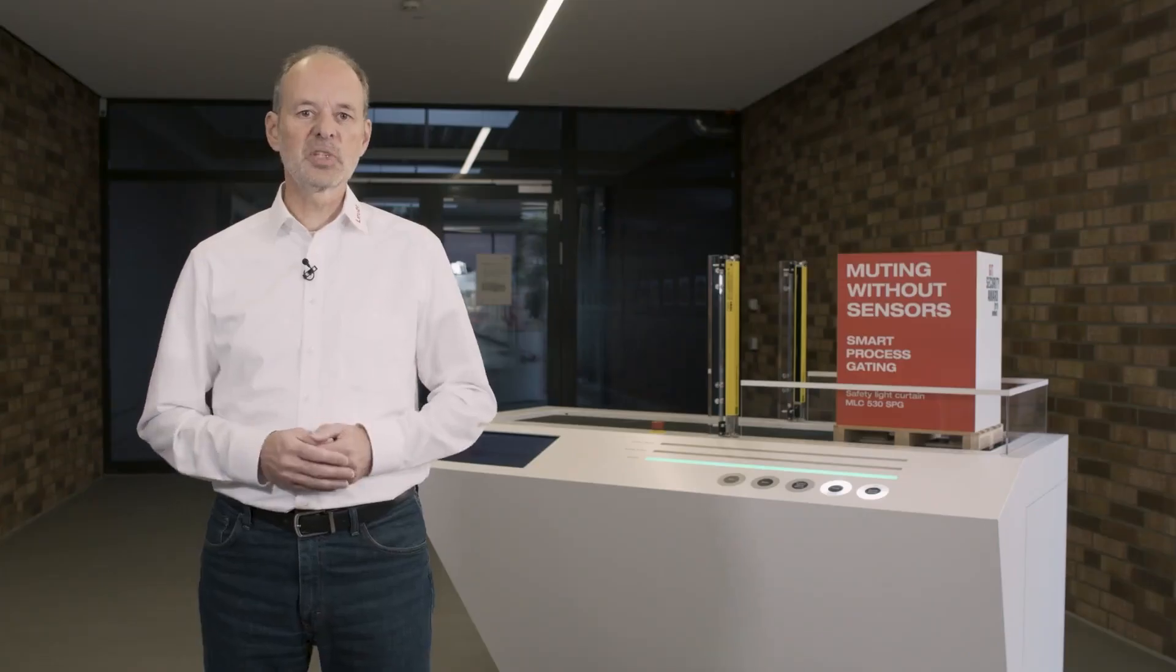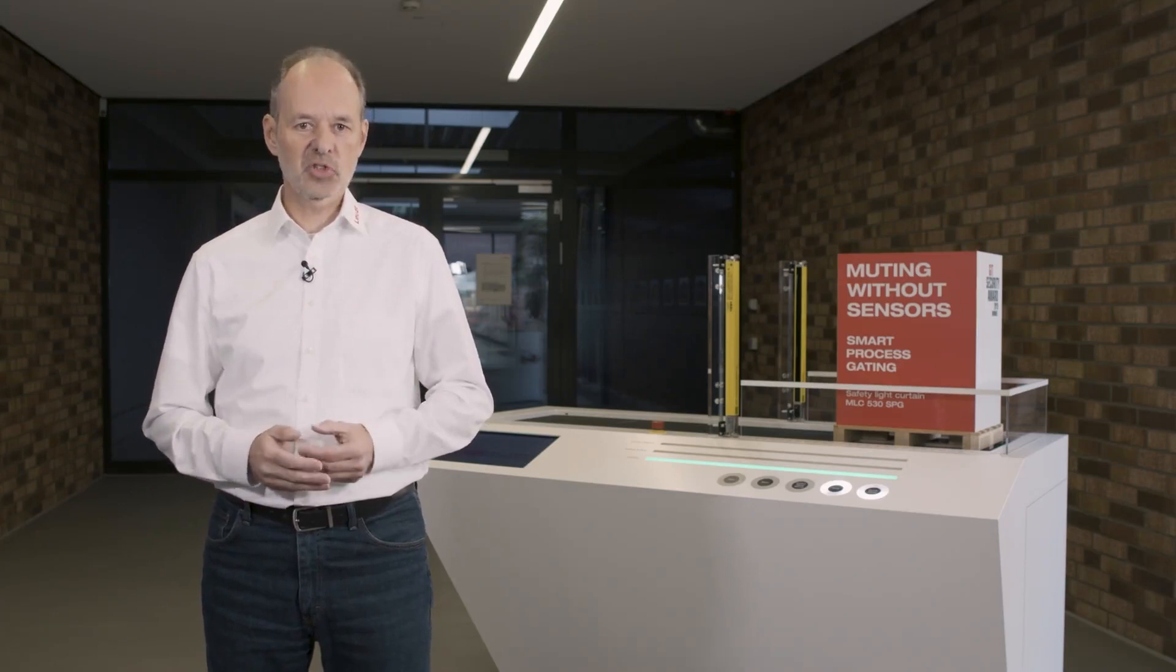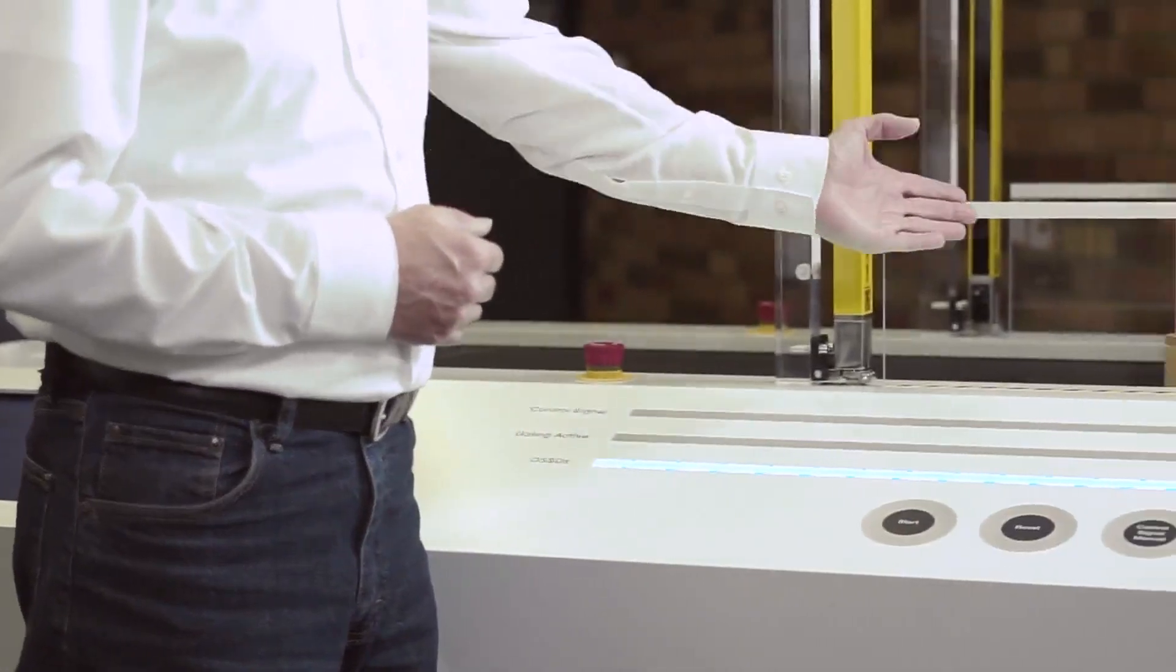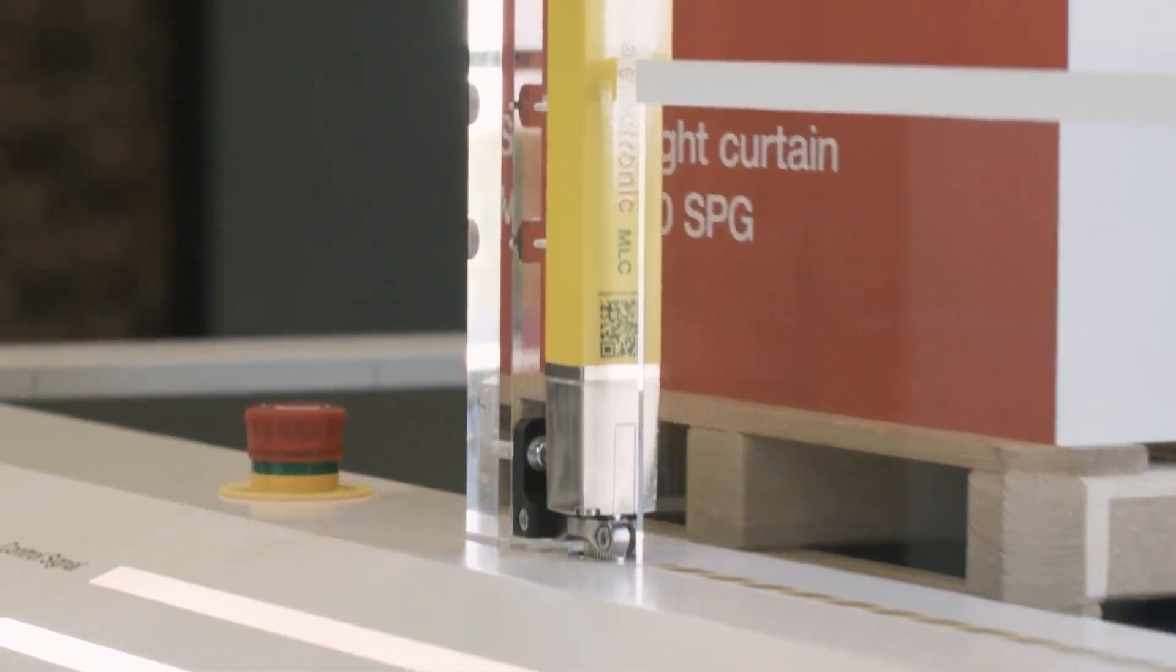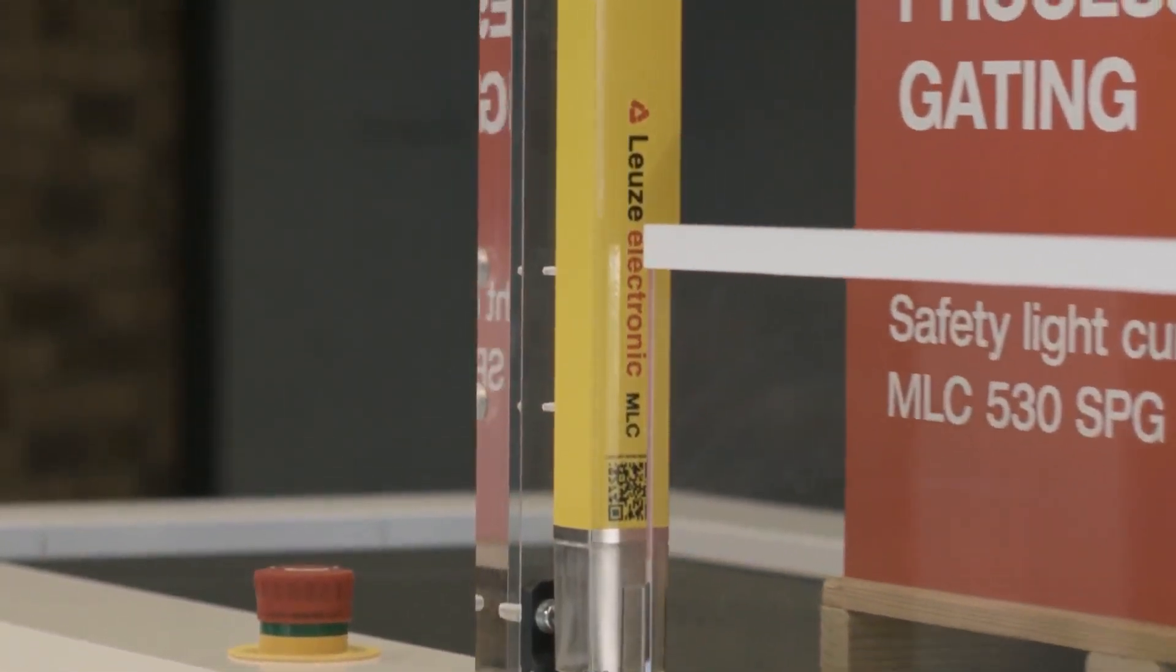Today we would like to introduce you to the new Smart Process Gating methods and the advantages of how this procedure works. The special thing about this procedure is that no additional muting sensors on the side of the safety light curtain are necessary. This allows a space-saving system design and, at the same time, increases the reliability of access security.